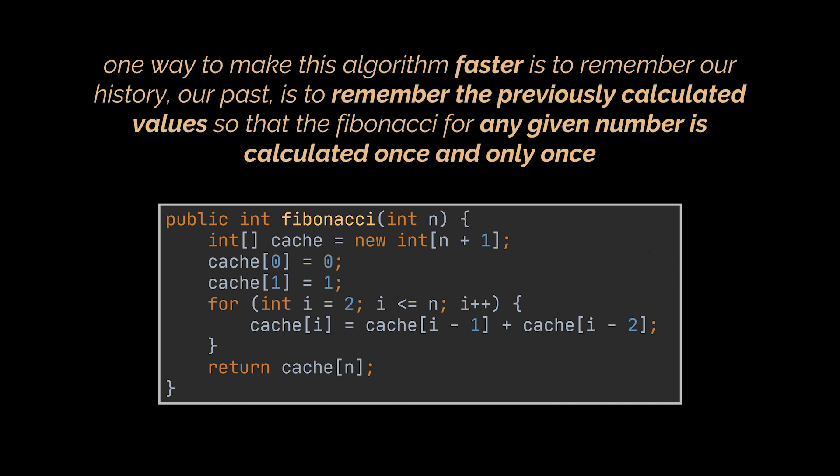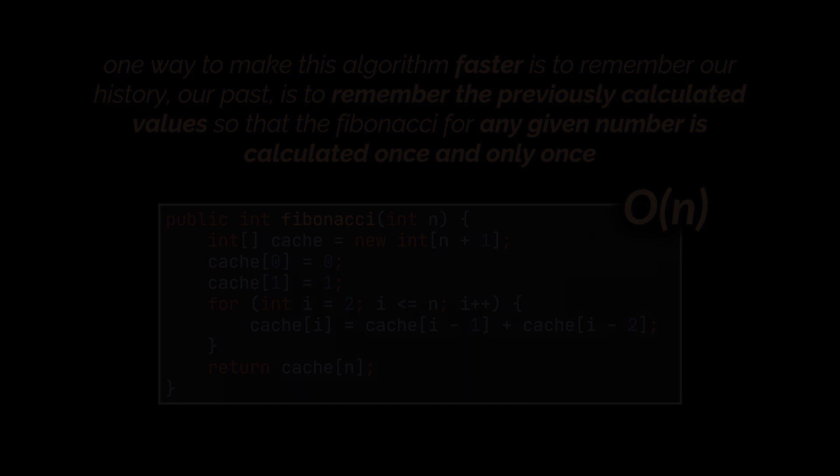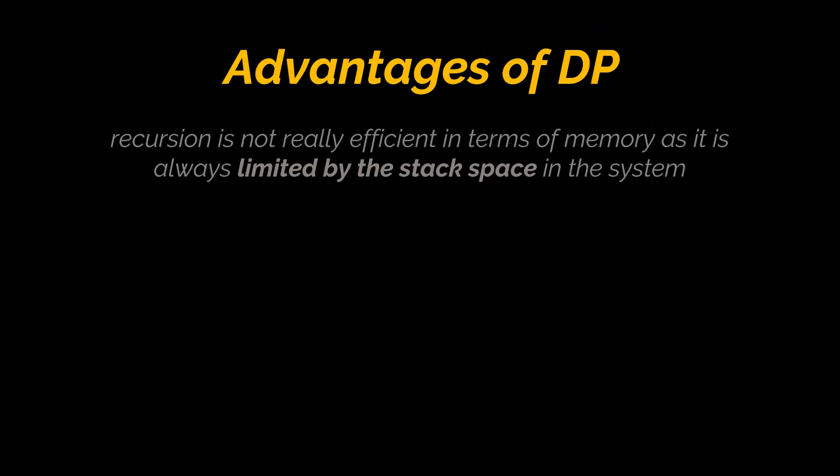As you can see in the code snippet in front of you, the time complexity of this method is linear, or O(n), since we only have one for loop that runs till n. Before proceeding further, let's lay down why this approach — DP — is better than recursion.